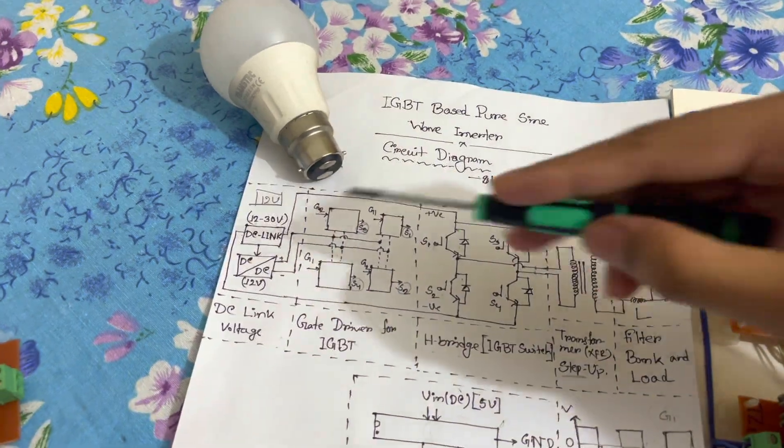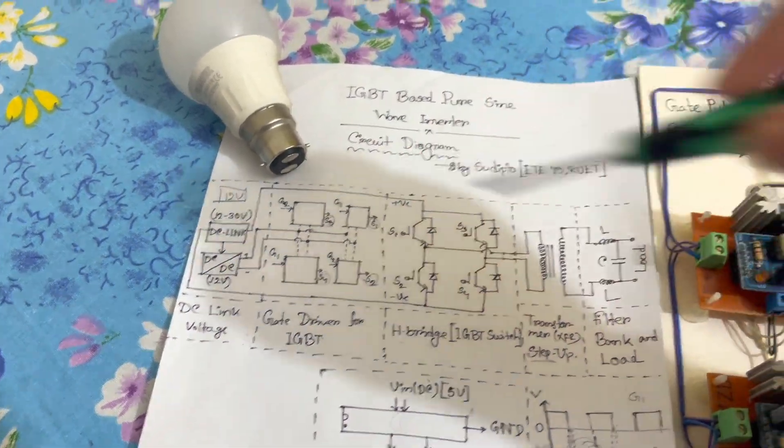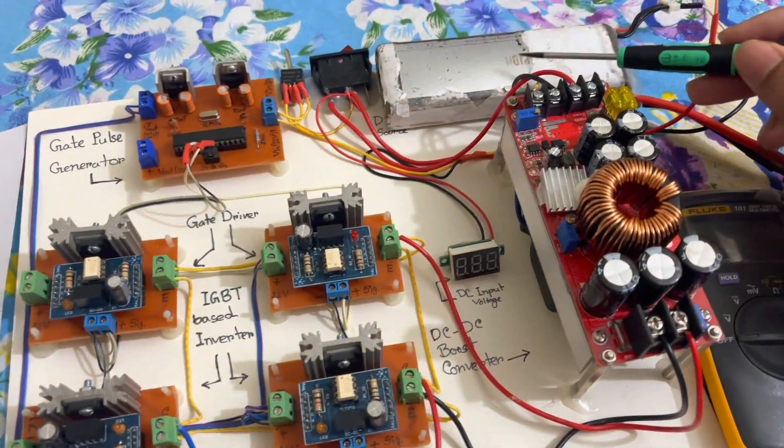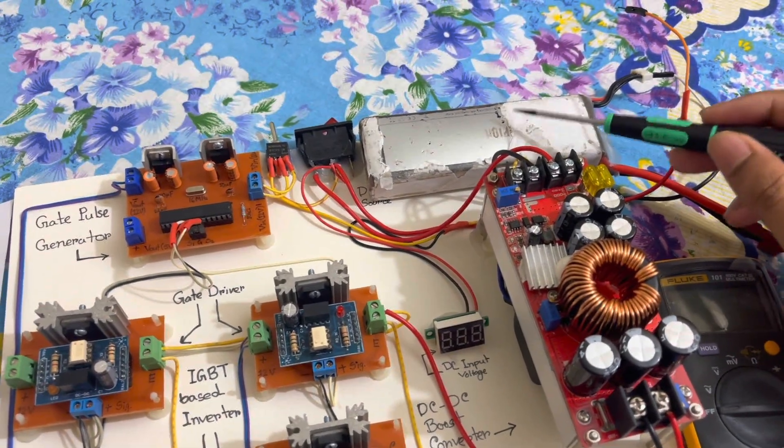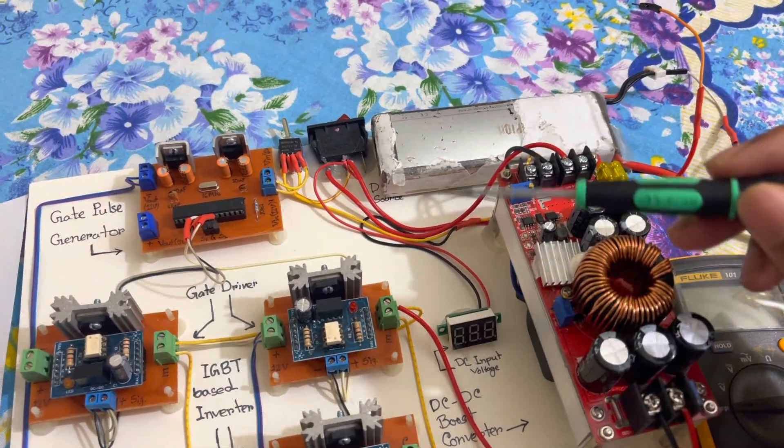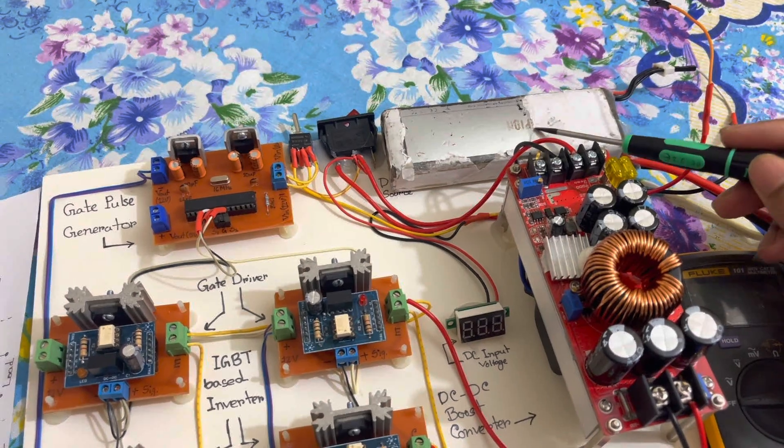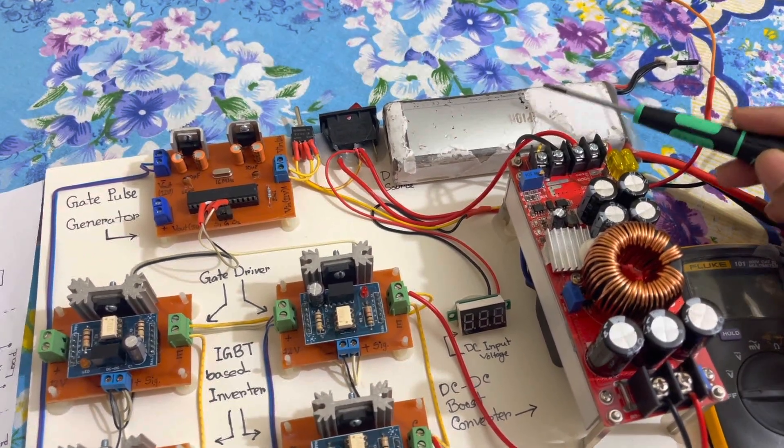Next, our main part is the DC link supply. Here you can see I have used a lithium polymer ion battery for this demonstration. Actually I used lithium ion battery but for this demonstration I used lithium polymer battery.